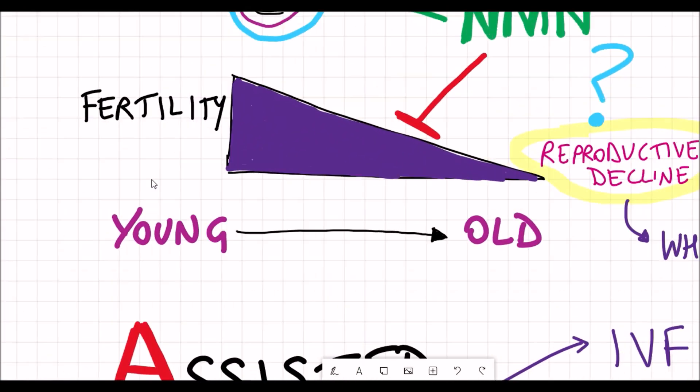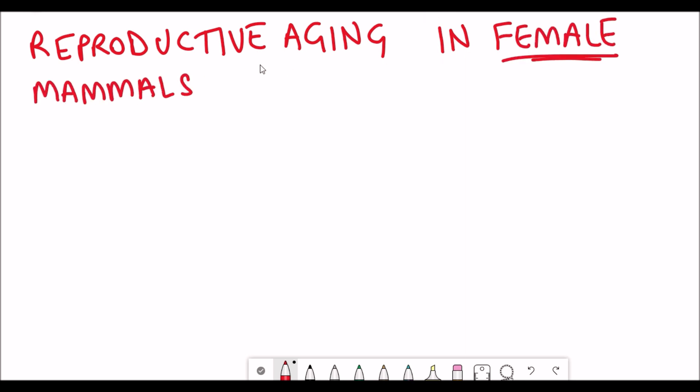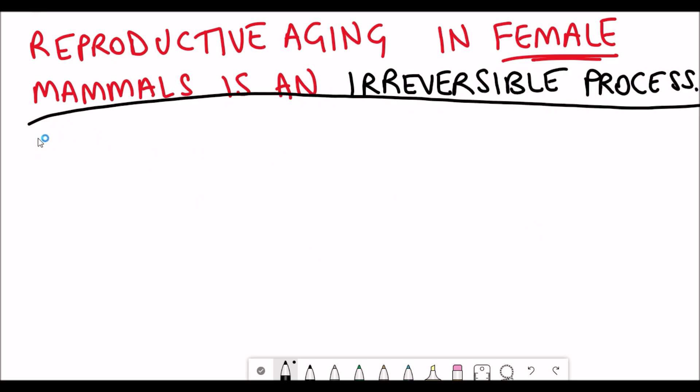But why is there reproductive decline in the first place? In female mammals, reproductive aging is an irreversible process, and the main reason is considered to be due to a decline in oocyte quality that occurs as you age. This is rate limiting for human fertility.